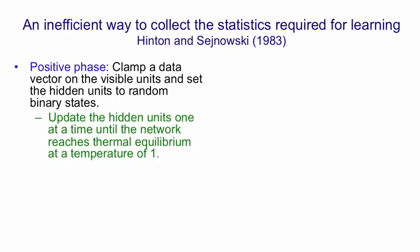We actually did that by starting at a higher temperature and reducing it, but that's not the main point here. And then once you reach thermal equilibrium, you sample how often two units are on together. So you're measuring the correlation of i and j with that visible vector clamped. You then repeat that over all the visible vectors so that that correlation you're sampling is averaged over all the data.